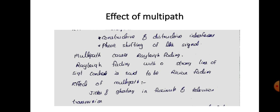Rayleigh fading with a strong line-of-sight component is said to be Rician fading. Jitter and ghosting in facsimile and television transmission is also a main effect of multipath. Sometimes when you are seeing pictures on the television screen, they may appear doubled. That is due to the effect of multipath.